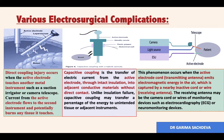Good morning all, hello everyone, hope you all are doing good. Today the aim of discussion is to discuss various electrosurgical complications with a primary focus on the types of coupling: direct coupling, capacitative coupling, and something called antenna coupling. Today the aim is to differentiate between these three complications of electrosurgery.